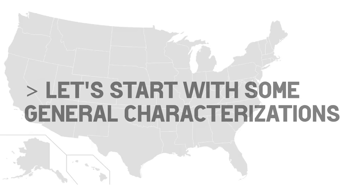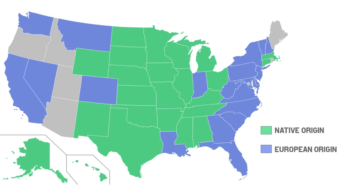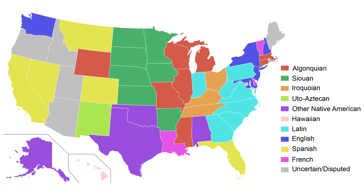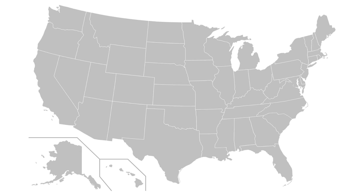Let's start with some general characterizations. State names come from a variety of languages: 24 derive from indigenous languages of the Americas — the Native American idioms — although sometimes through European adaptations. 22 other state names derive from actual European languages and words. And the 6 remaining ones have unclear origins, but we'll get to those in a minute.